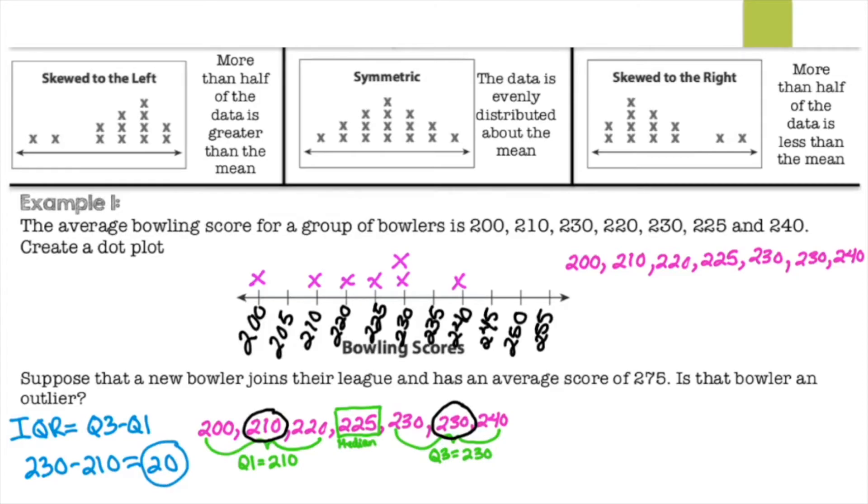And now to do the outlier rule, remember, is quartile 3 plus the product of 1.5 times your IQR. And to find the low outlier, that would be quartile 1 minus 1.5 times IQR. So what I like to do is actually find out what 1.5 times the IQR is, and that just helps me complete the rest of the problems a little bit quicker. So 1.5 times your IQR, which is 20, 1.5 times 20 is 30. So I'm just going to plug those values in.